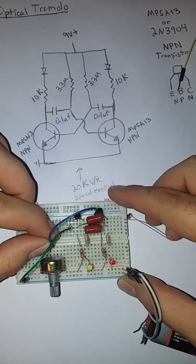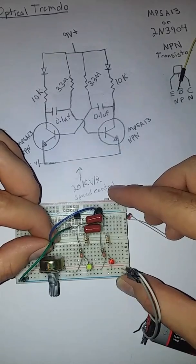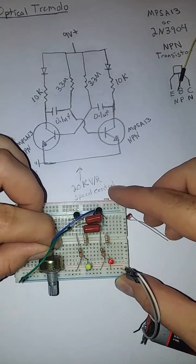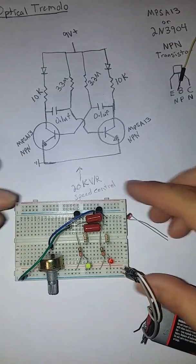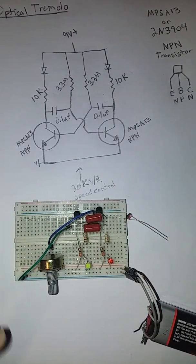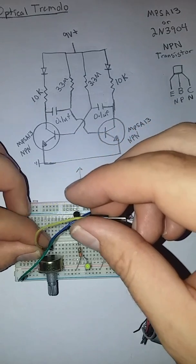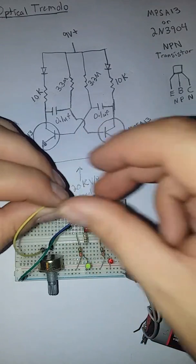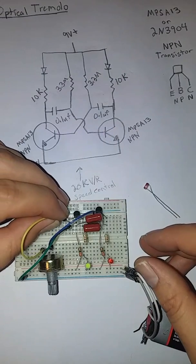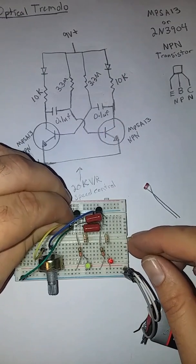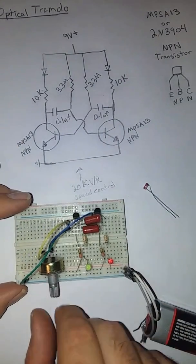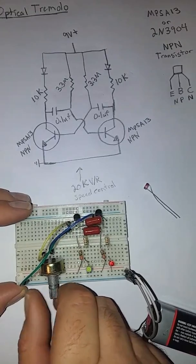And then you want to hook that to either the wiper or the left pin. Either one it doesn't matter. And plug it in here. And then plug that where your blue wire was originally. And now we have a controllable speed.